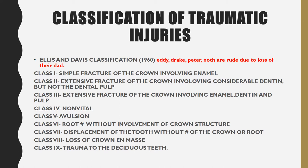Class 1 is a simple fracture of the crown involving only enamel. Class 2 is an extensive fracture of the crown involving considerable dentine but not the dental pulp, so it involves enamel and dentine. Class 3 is again an extensive fracture of the crown, but now it involves all three: enamel, dentine, and pulp.